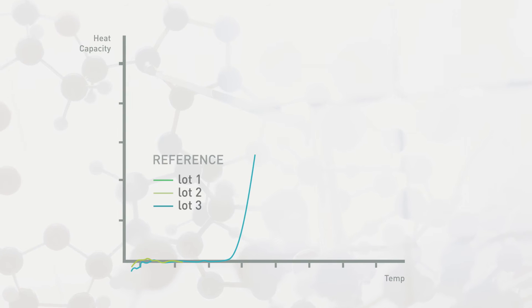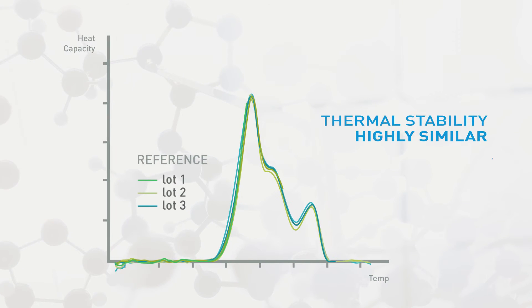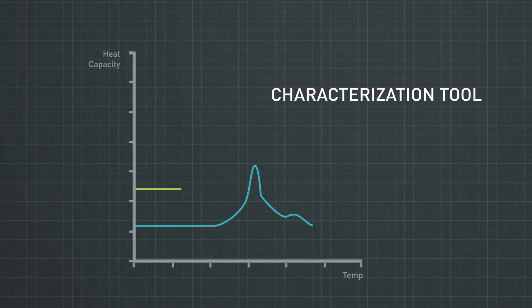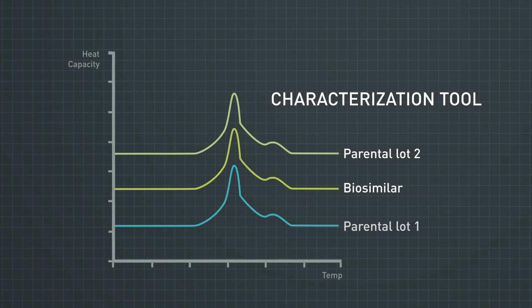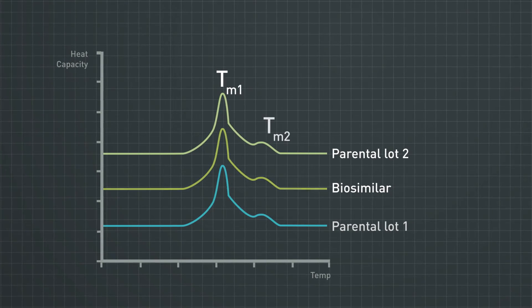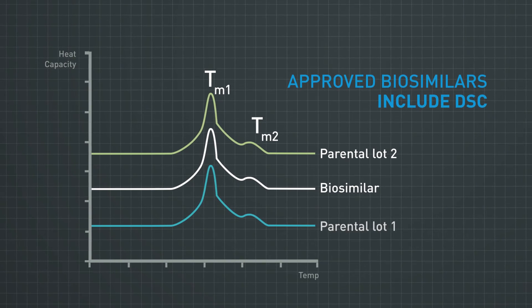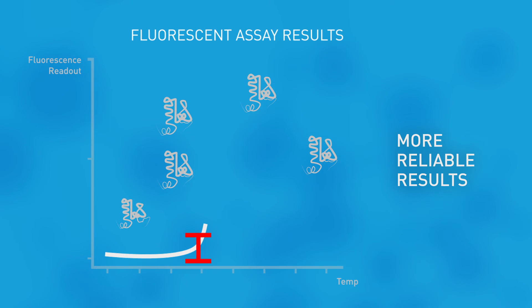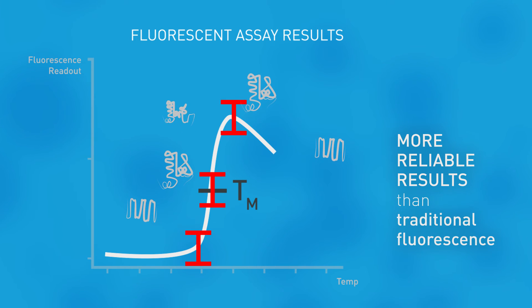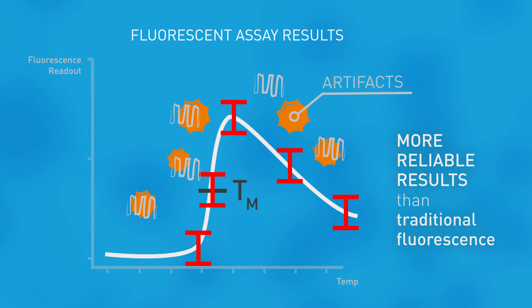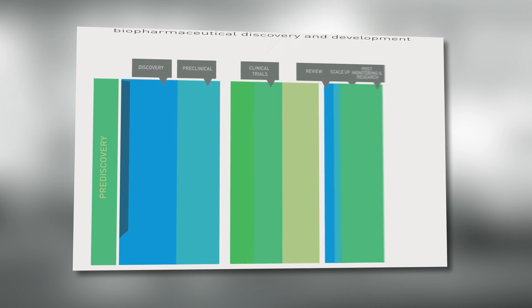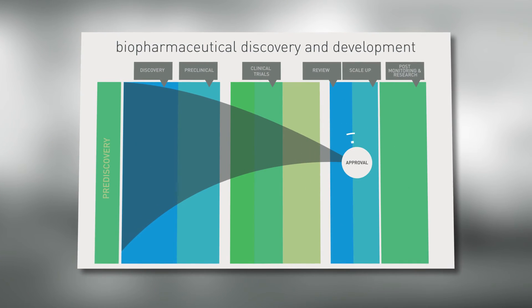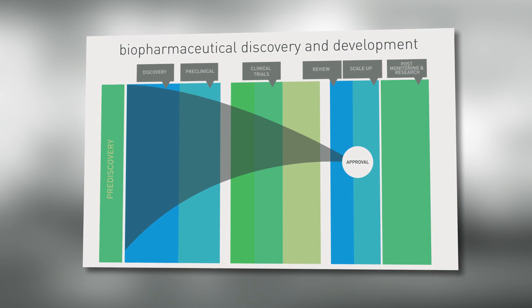When DSC profiles are identical within experimental variability, the thermal stability of the samples are highly similar. DSC is also used as a characterization tool in the development of a biosimilar drug, by comparing the DSC thermograms of the parental or innovator drug with the biosimilar drug. Most approved biosimilars have included DSC in their regulatory submissions. DSC is more reliable than TM measurements from intrinsic or extrinsic fluorescence, which frequently introduce unwanted artifacts or unexpected TM shifts. It's an essential stability assay throughout development, including stability comparability and biosimilarity characterization, which are used to confirm drug comparability results in a more successful drug.